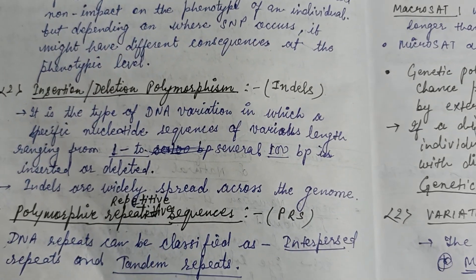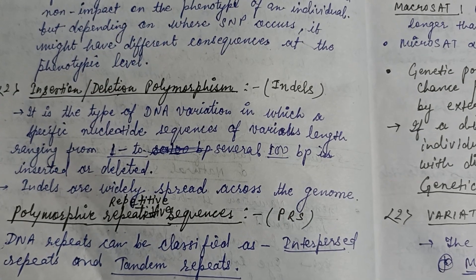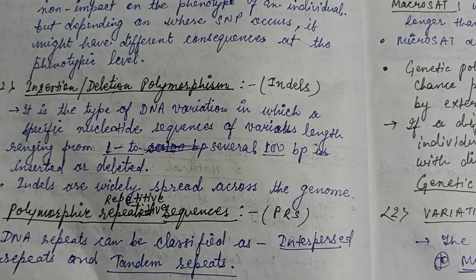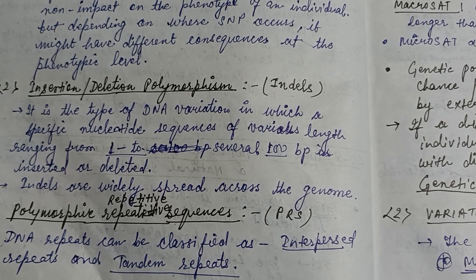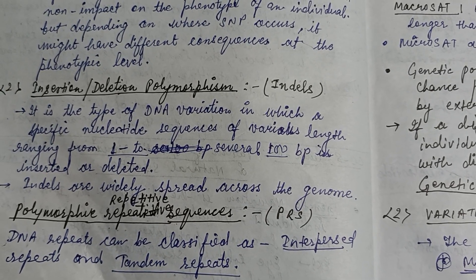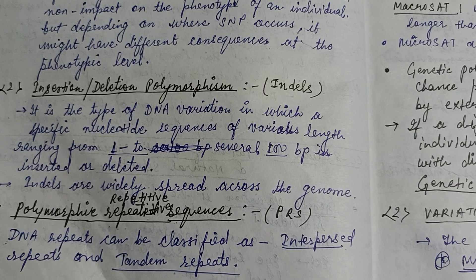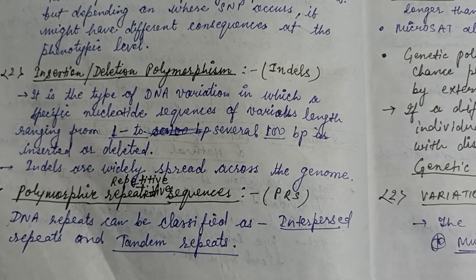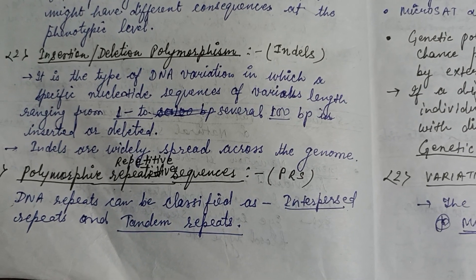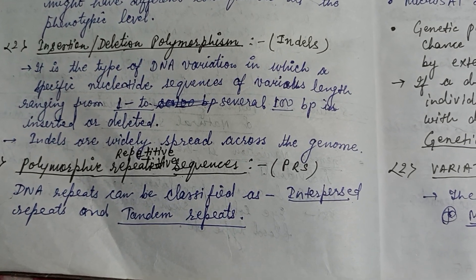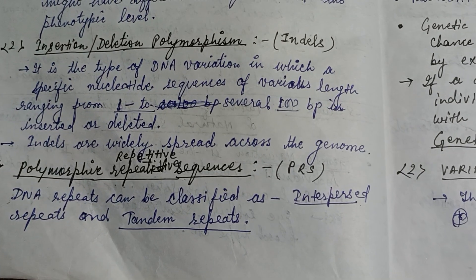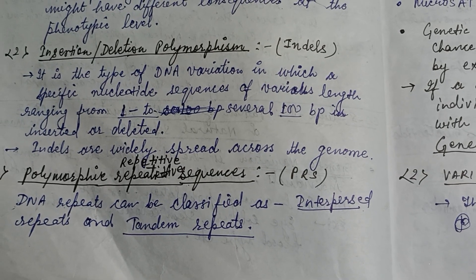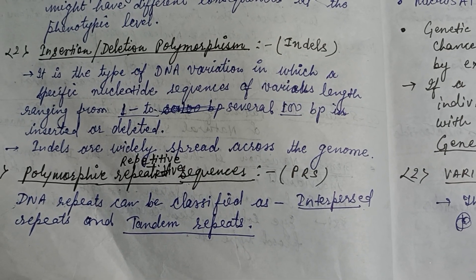The second type is insertion-deletion polymorphism, as the name suggests — it involves the insertion or deletion of a nucleotide. This type is widely spread across the genome.